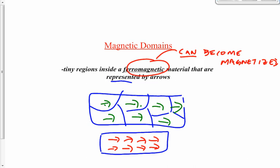Which end is the north pole and which is the south pole? We arbitrarily define the north pole as the direction the domains point. The domains always point from south to north.